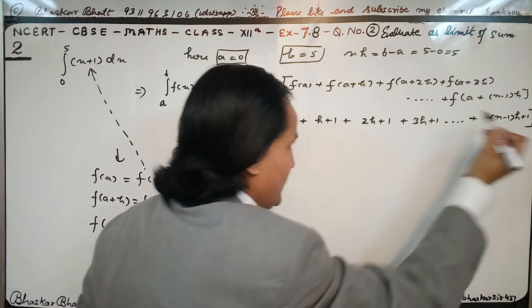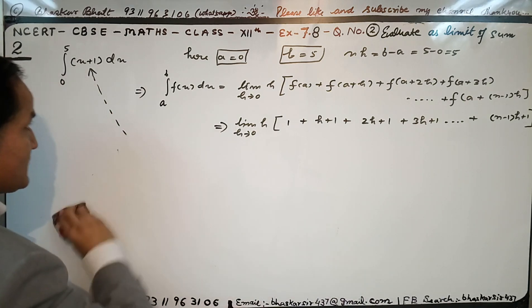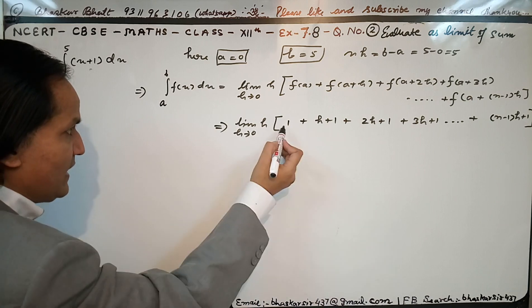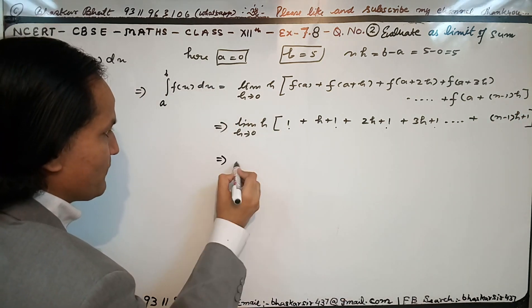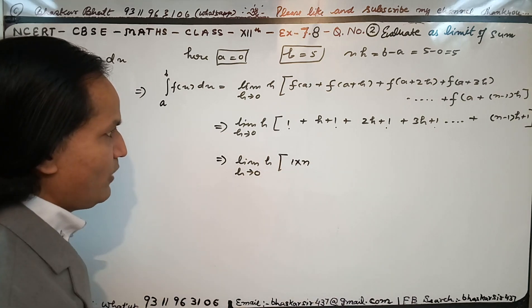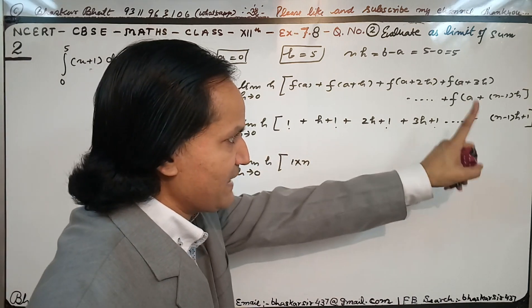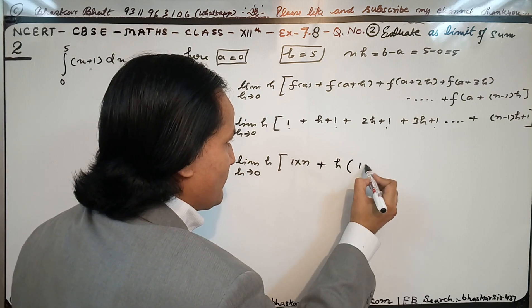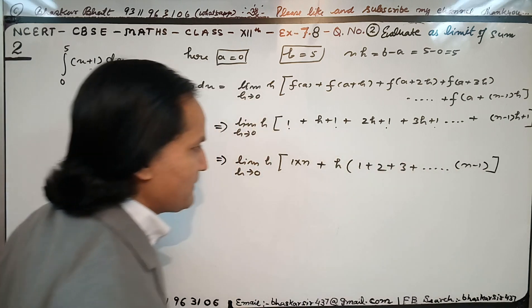यह बात समझ में आई। अब हम इसको simplified करते हैं। सबसे पहले 1 को count करते हैं — हमारे पास n ones हैं, तो 1 × n = n। अब h वाले terms: h + 2h + 3h + ... + (n−1)h — इनमें से h common लेंगे, तो अंदर बचेगा 1 + 2 + 3 + ... + (n−1)।